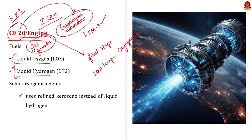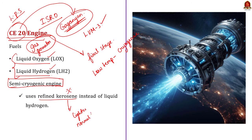ISRO recently developed a new semi-cryogenic engine. The difference between a normal cryogenic engine and a semi-cryogenic engine is that in a semi-cryogenic engine, liquid hydrogen is replaced by refined kerosene. The advantage of using refined kerosene is that it is lighter than liquid fuel and can be stored at normal temperature — that is why it is called a semi-cryogenic engine.